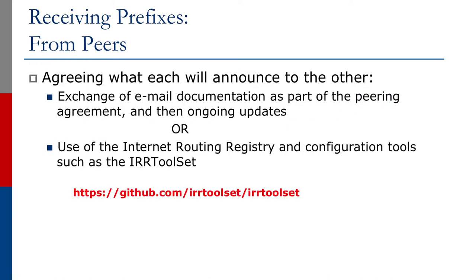Agreeing what each will announce to the other can be done using emails as part of the pairing agreement, and then updates or use of the internet routing registry and configuration tools such as the IRR toolset. The URL is shown on the screen.